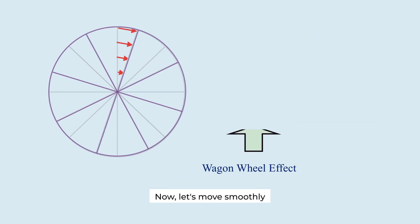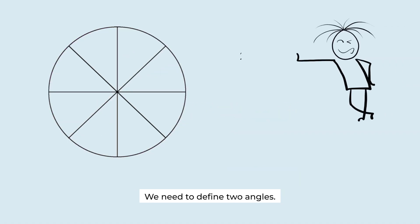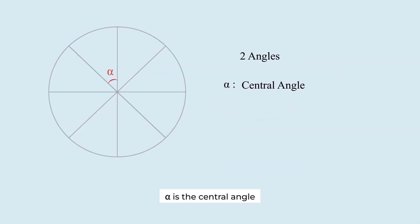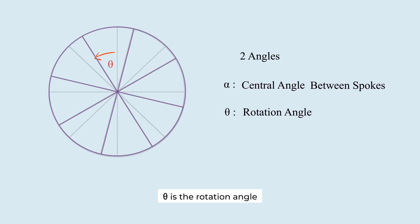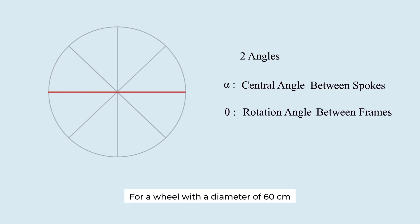Now, let's move smoothly into the mathematics behind it. We need to define two angles. Alpha is the central angle between two spokes. Theta is the rotation angle between two frames. For a wheel with a diameter of 60 cm and 8 spokes, alpha is 45 degrees.